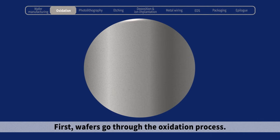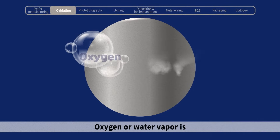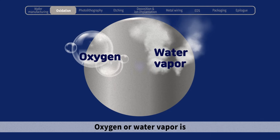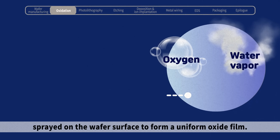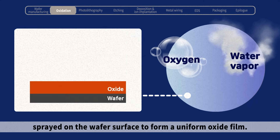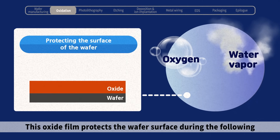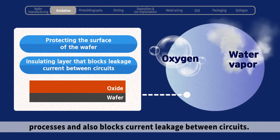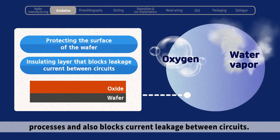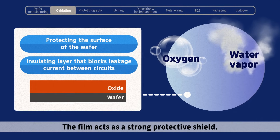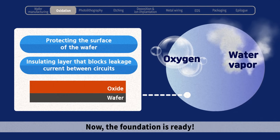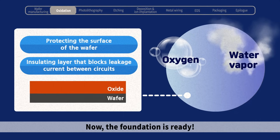First, wafers go through the oxidation process. Oxygen or water vapor is sprayed on the wafer surface to form a uniform oxide film. This oxide film protects the wafer surface during the following processes and also blocks current leakage between circuits. The film acts as a strong protective shield. Now the foundation is ready!